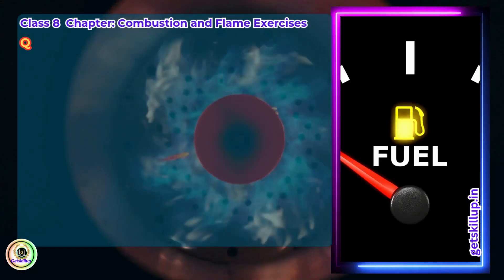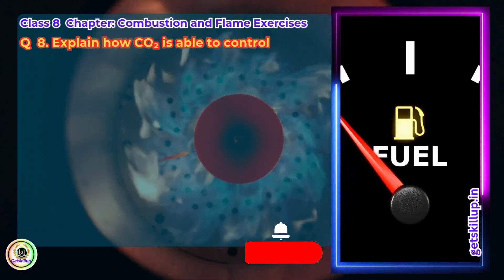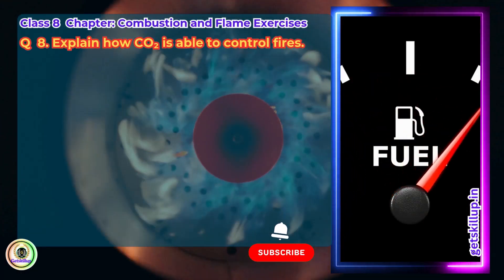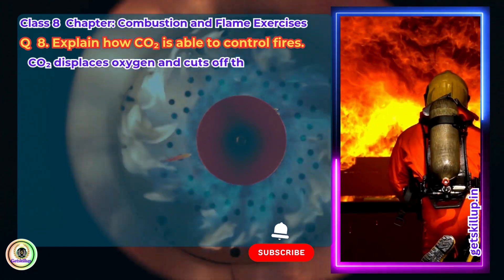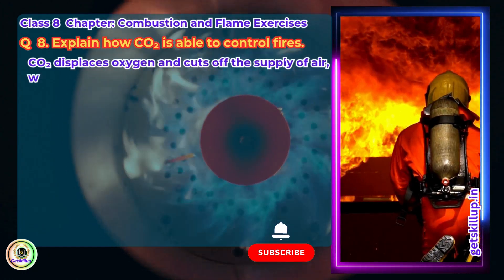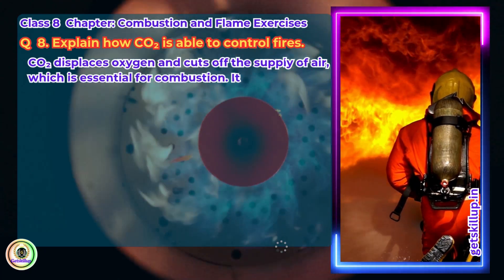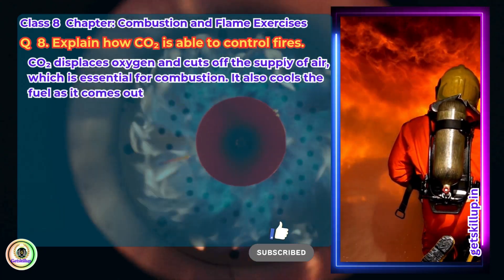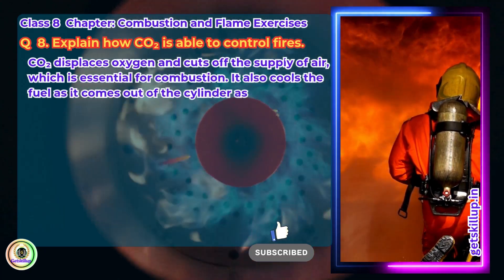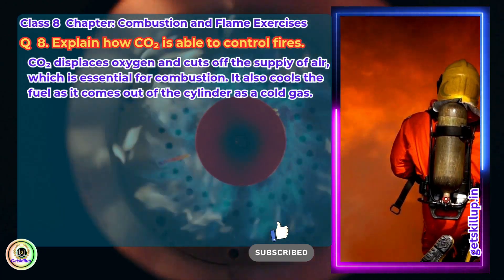Question 8: Explain how carbon dioxide is able to control fires. Answer: Carbon dioxide displaces oxygen and cuts off the supply of air, which is essential for combustion. It also cools the fuel as it comes out of the cylinder as a cold gas.